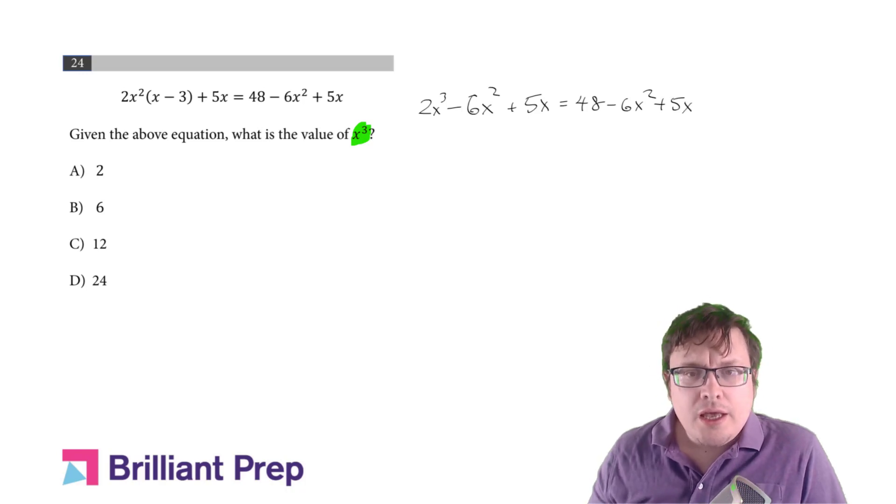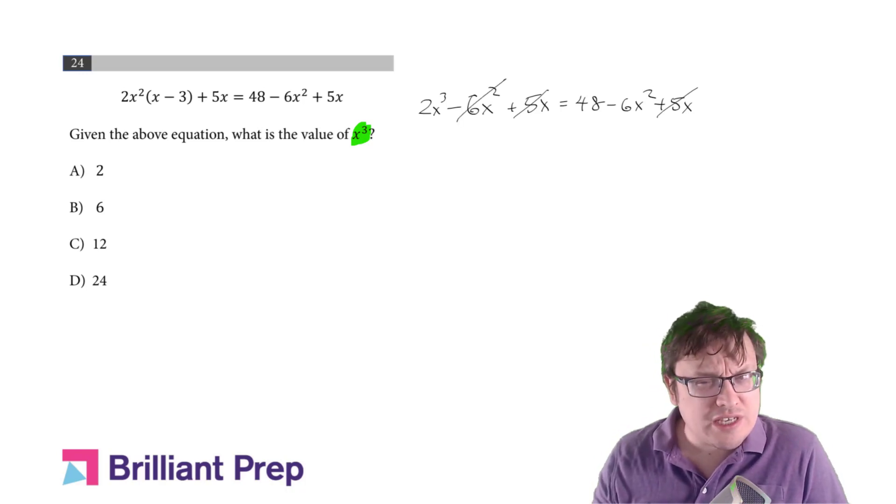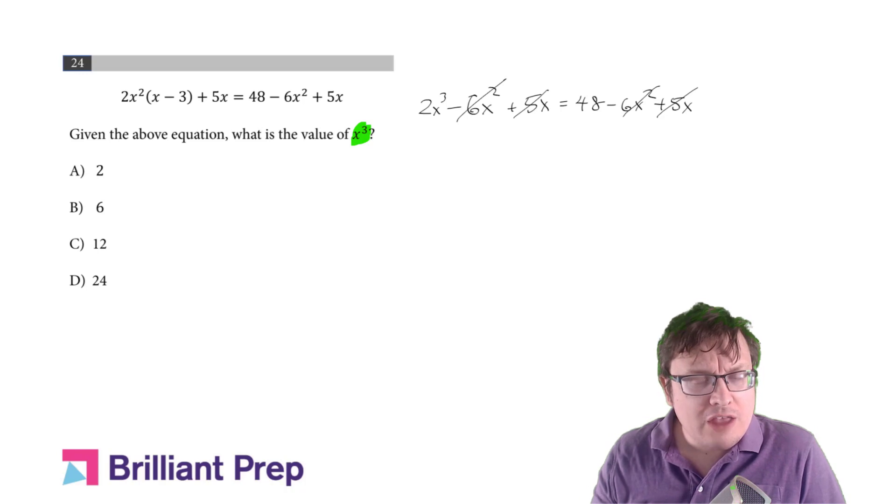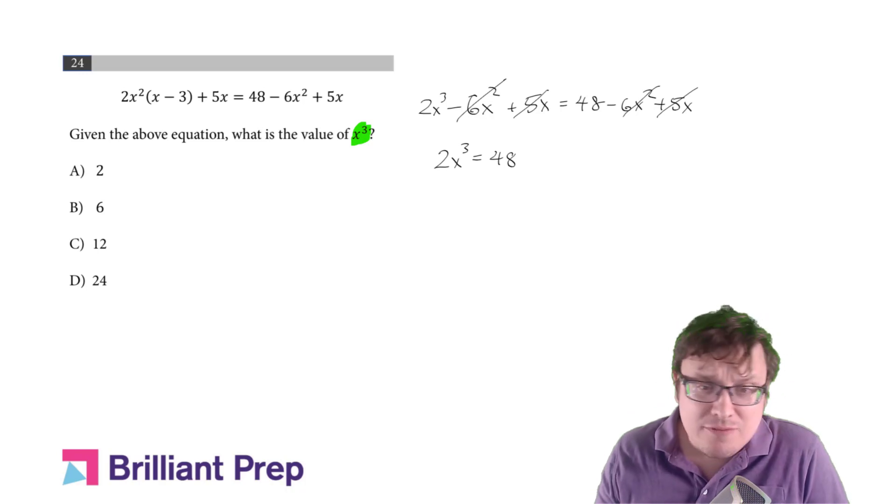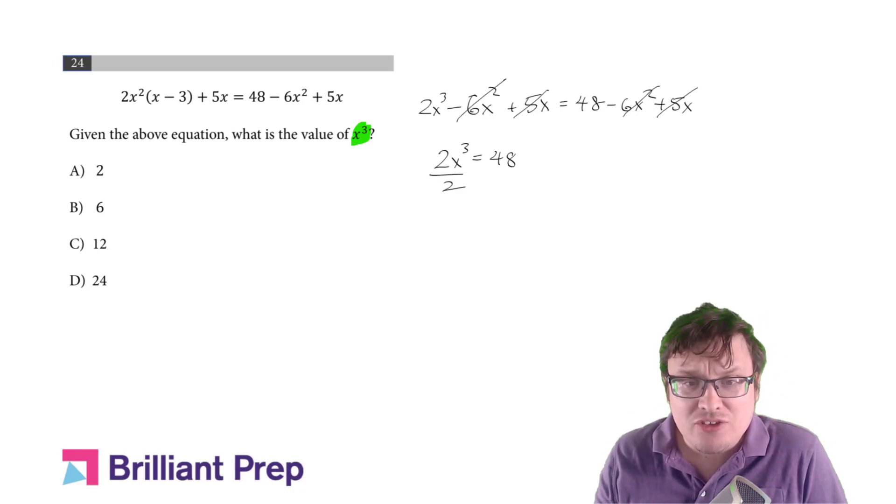If I subtract 5x from both sides, those will cancel. If I add 6x squared to both sides, those will cancel. And so I'm left with 2x cubed equals 48. No reason to solve for x here. You can if you'd like, but we can just go ahead and divide by 2, and we get x cubed is 24 straight away, and that's choice D.